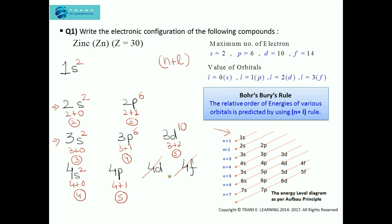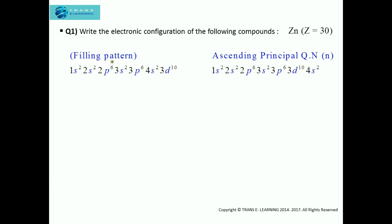Now the question arises: how do you write the final electronic configuration — with the pattern in which you filled the electrons, or with the pattern of increasing principal quantum number? I will explain how to write the electronic configuration in the correct manner and why. The filling pattern gives us one form, while the ascending principal quantum number form places the 4s orbital as the outermost orbital.